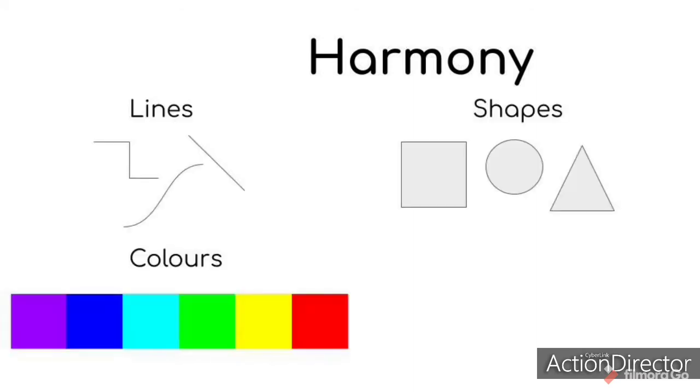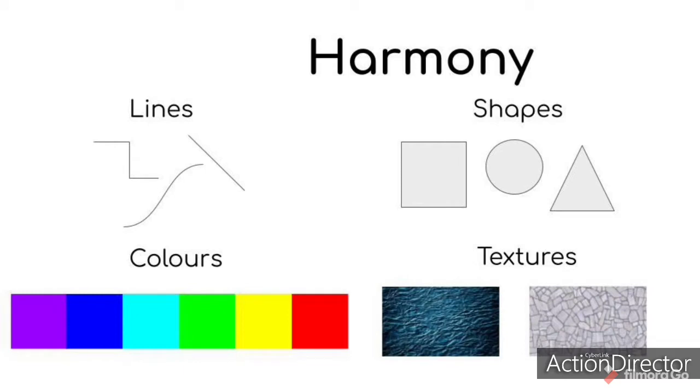Our lesson today is about harmony. Using elements with similar aspects, such as lines, shape, color, and texture, throughout the artwork creates harmony. Harmony keeps a piece clear and concentrated on its subject.